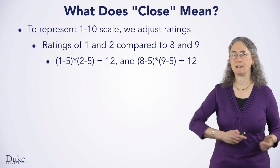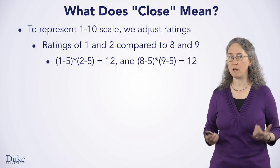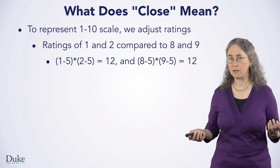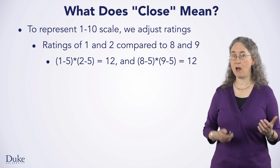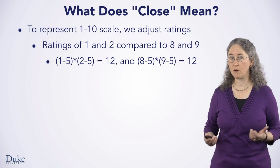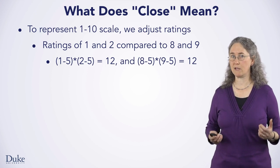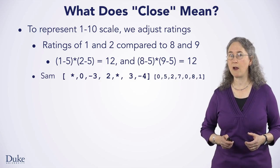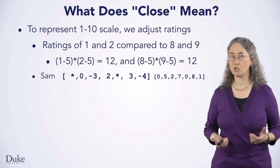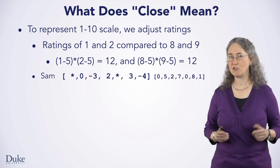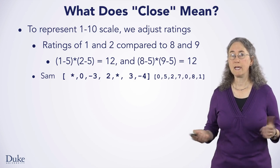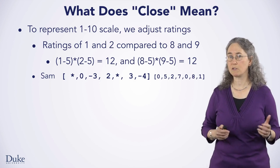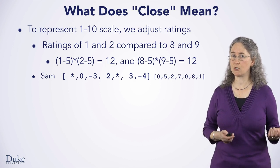We'll center the ratings by subtracting the middle rating of 5 from each one. So rather than using 1 and 2, we'll use 1 minus 5 and 2 minus 5, or minus 4 and minus 3. For the ratings of 8 and 9, we'll use 8 minus 5 and 9 minus 5, or 3 and 4. We get a product of 12 for both centered ratings, and thus we get that the ratings are equally similar. Ratings that were originally 0 are shown with an asterisk — we won't use those in calculating a similarity score. Here are 7 ratings from Sam shown centered with their original non-centered ratings; zeros in the original are represented by asterisks in the centered ratings.